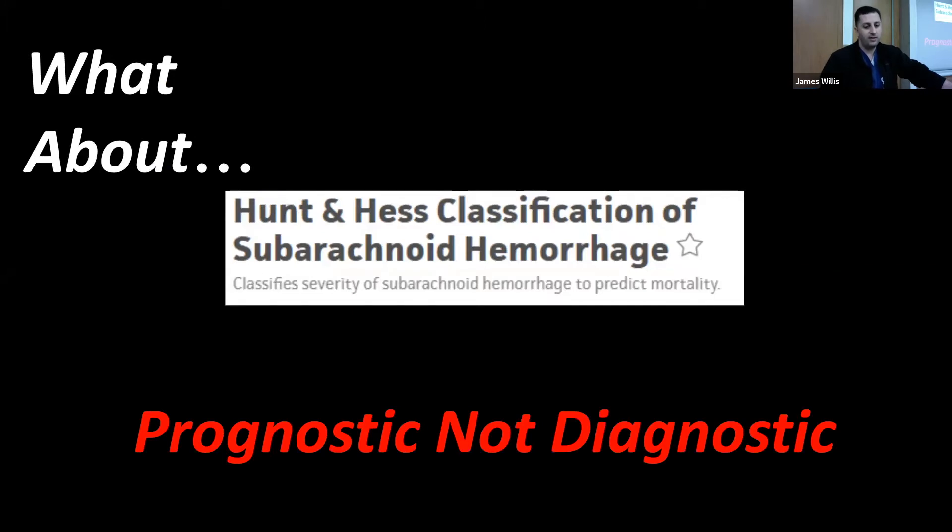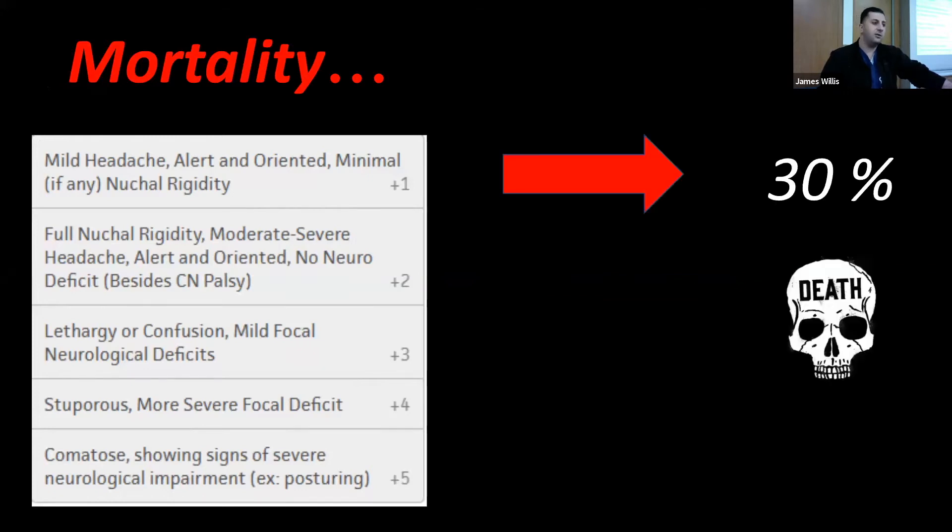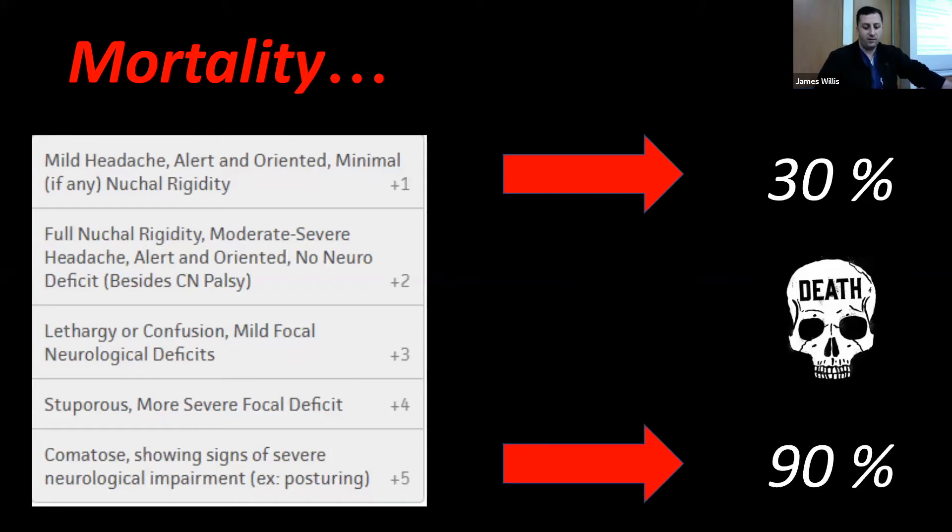So when we talk about this clinical decision rule, one of the weaknesses is the specificity. You're not really going to be able to clinch the diagnosis with this. However, it has been recently externally validated, something that was initially attributed as one of its weaknesses. This always comes up in the conversation. What about the Hunt and Hess? There may be some confusion about this. This is actually more prognostic, not diagnostic. The goal of Hunt and Hess is to take patients who have a confirmed subarachnoid hemorrhage, put them in one of these five categories. Based on this, it gives you essentially a mortality percentage. At stage five, you have a 90% mortality.